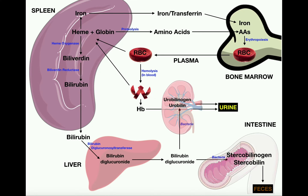In this video, we're going to discuss what happens when red blood cells or erythrocytes are degraded. We're going to track each part of the red blood cell, which really amounts to the heme, the globin (which is the protein parts), and the iron. So what happens with all three of these things?